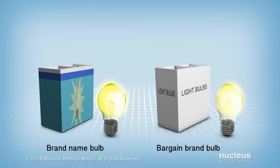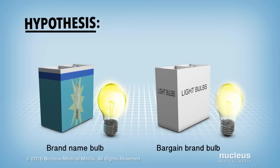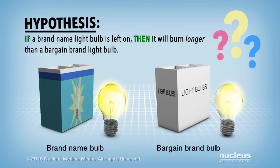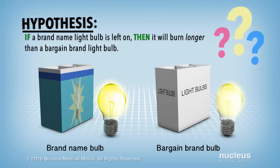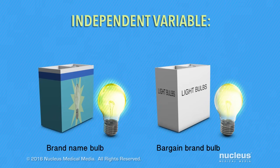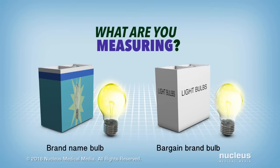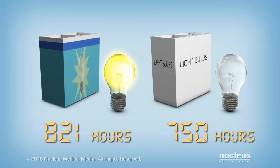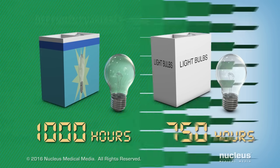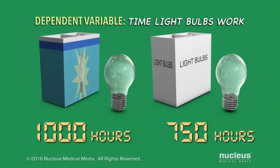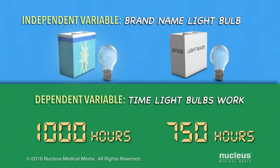Here's a final example to help you understand these terms. You predict that if a brand name lightbulb is left on continuously, then it will burn longer than a bargain brand lightbulb used in the same manner. What is the independent variable? It's the brand name lightbulb. What are you measuring? You're measuring how many hours the lightbulbs work before burning out, which is the dependent variable.